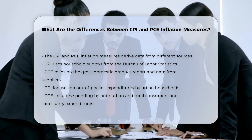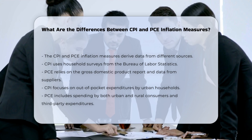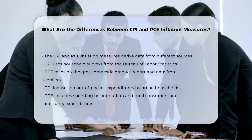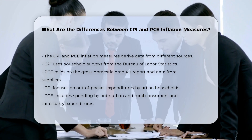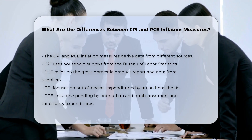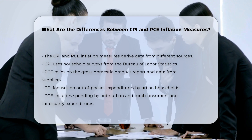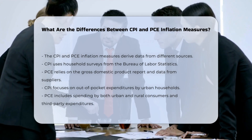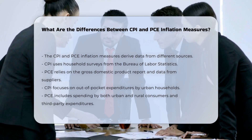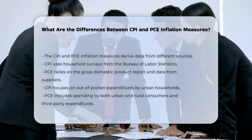the PCE includes spending made by both urban and rural consumers, as well as expenditures made on their behalf by third parties, such as employer-provided health insurance, Medicare, and Medicaid.